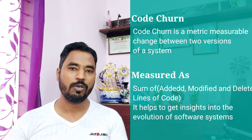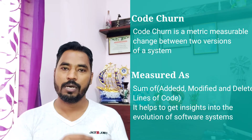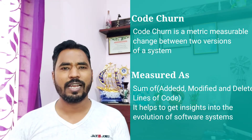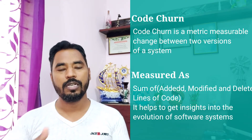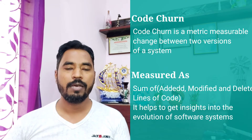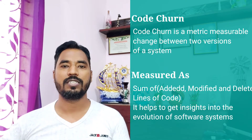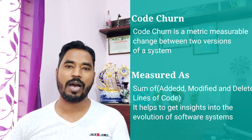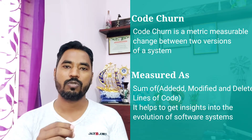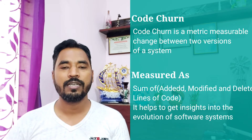The code churn measurement metric is equal to the sum of: number of lines added, plus number of lines modified, plus number of lines deleted. You add them all up together and that is what you get as code churn.